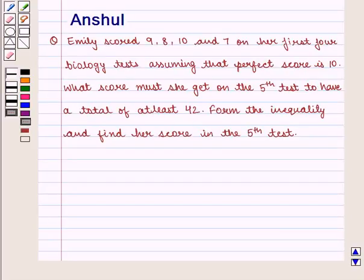Hello and welcome to the session. In this session we shall discuss the following question: Emily scored 9, 8, 10, and 7 on her first 4 biology tests. Assuming that perfect score is 10, what score must she get on the 5th test to have a total of at least 42? Find the inequality and find her score in the 5th test.